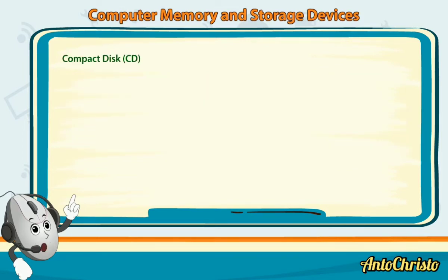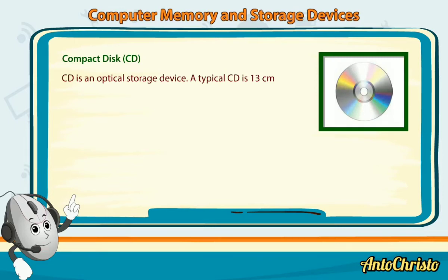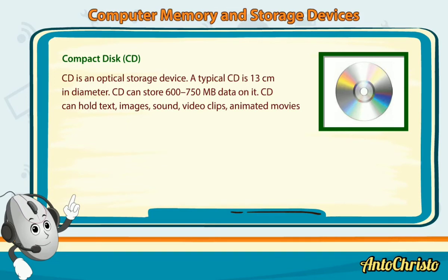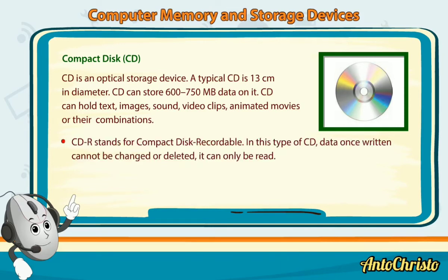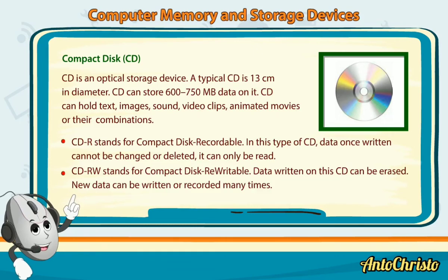Compact Disk (CD): A CD is an optical storage device. A typical CD is 13 cm in diameter and can store 600 to 750 MB of data. It can hold text, images, sound, video clips, animated movies or their combinations. CD-R stands for Compact Disk Recordable — data once written cannot be changed or deleted and can only be read. CD-RW stands for Compact Disk Rewritable — data written on it can be erased and new data can be written or recorded many times.